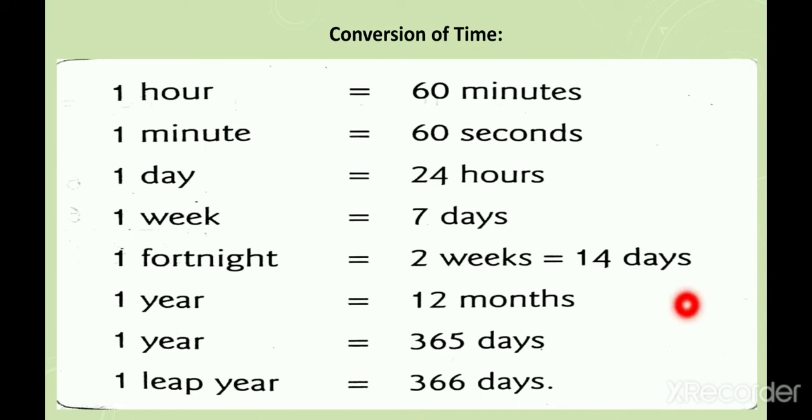Now, here is a very important table for conversion of time: 1 hour equals 60 minutes, 1 minute equals 60 seconds, 1 day equals 24 hours, 1 week equals 7 days, 1 fortnight means 2 weeks or 14 days, 1 year means 12 months, 1 year equals 365 days, or for leap year 366 days. This table is required to convert hours into minutes, minutes into seconds, days into hours, weeks into days, years into months, and years into days.